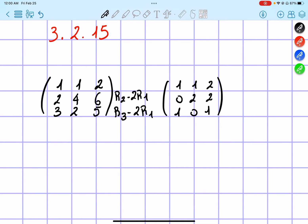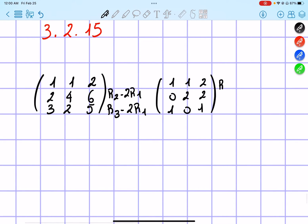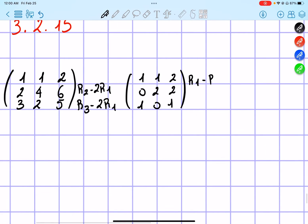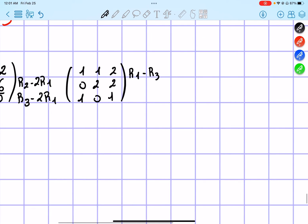So now I do row 1 minus row 3. And I get 0, 1, 1, 0, 2, 2, 1, 0, 1.